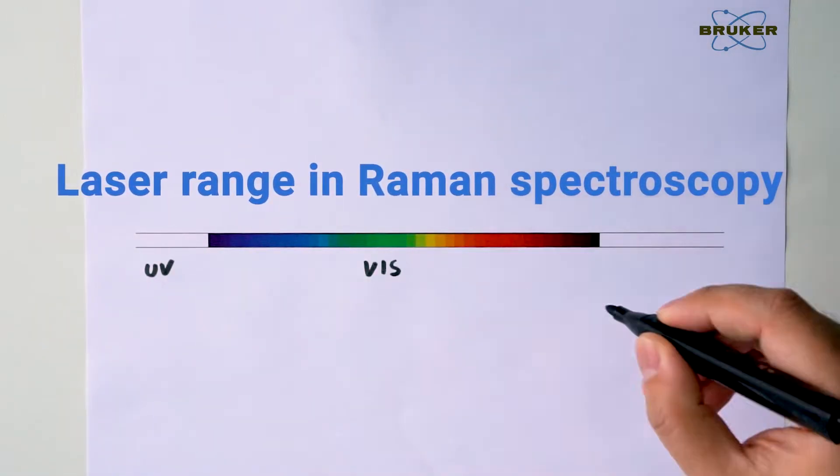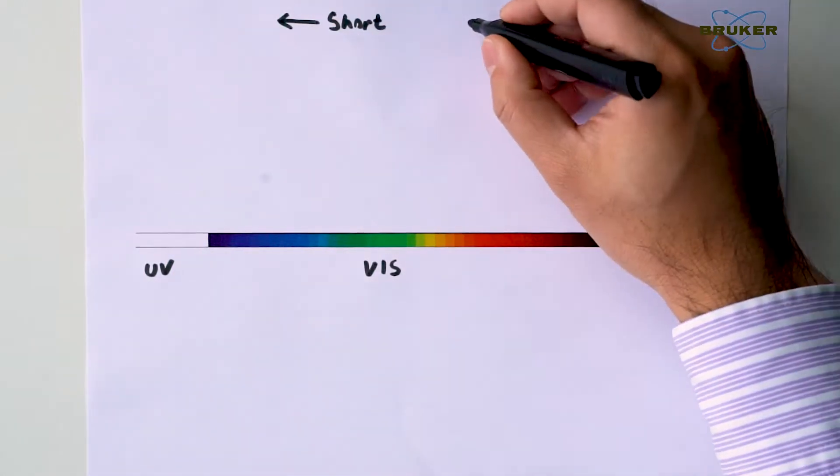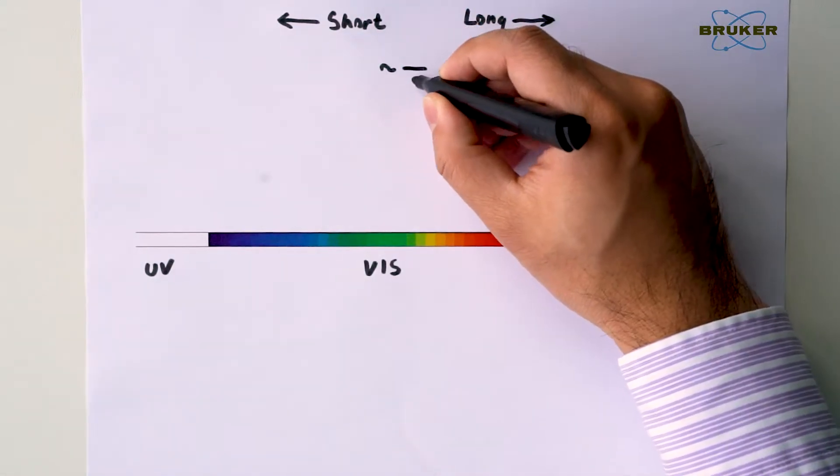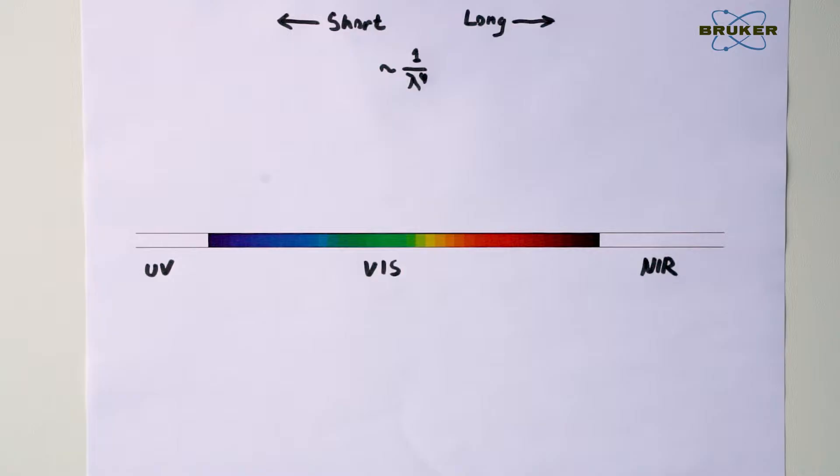Do you remember why is the sky blue? In our first video, we showed that the efficiency of the scattering process is inversely proportional to the fourth power of the wavelength. This means that the shorter the wavelength, the stronger the scattering effect.